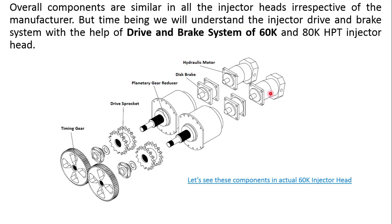To summarize the drive and brake system: the two hydraulic motors convert the hydraulic energy of the hydraulic oil into rotational energy. This rotational energy is provided to the planetary gear reducer through the drive shaft. The planetary gear reducer converts speed into torque, which is then provided to the drive sprockets, and these drive sprockets drive the chains.